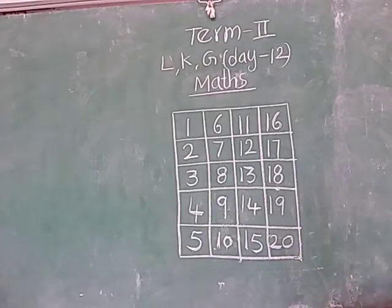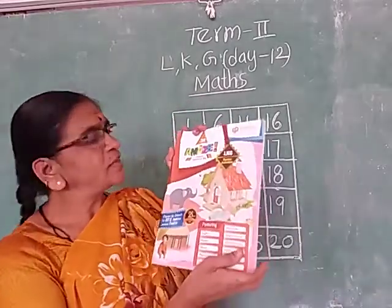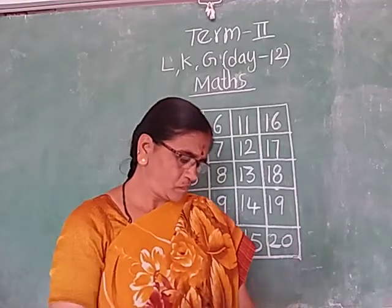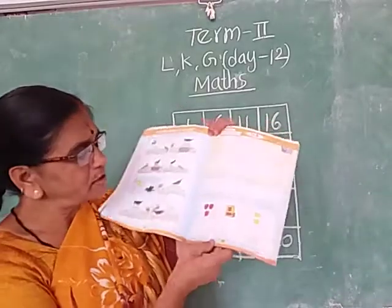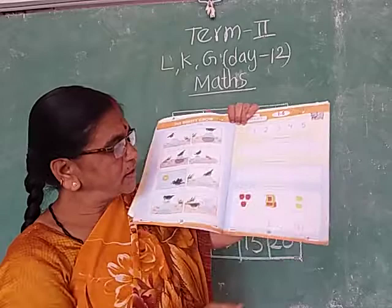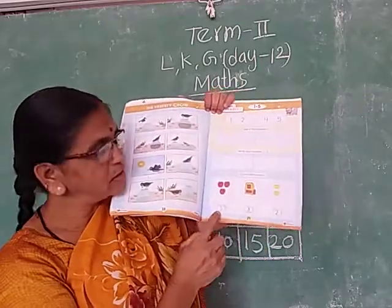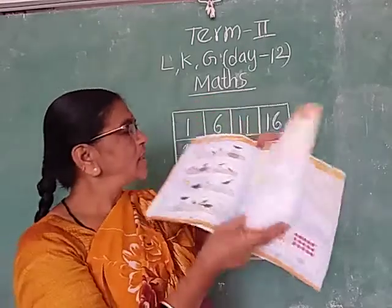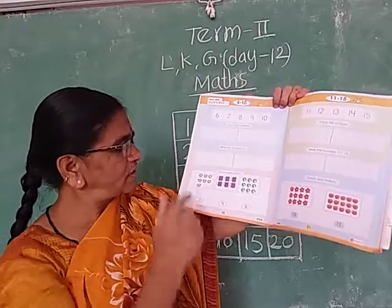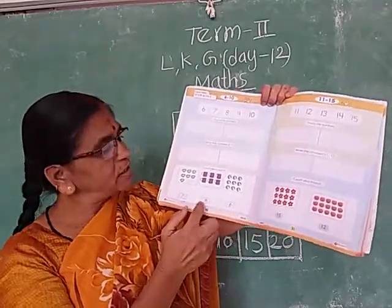Now review activity book. This is your LKG Review Activity Book. Page numbers are 29 and 30. Count: 1, 2, 3, 4, 5, 6, 7 cups — trace here. Match the numbers with pictures. How many? 3 apples — match to number 3. How many bags? 1 bag — match to number 1. How many cups? 2 — match to number 2. Here also same: 6 to 10 numbers — trace and write. Match the pictures. 7 cups — match to number 7. 6 mugs — match to number 6. 9 balls — match to number 9. This is your homework — you must do the homework.